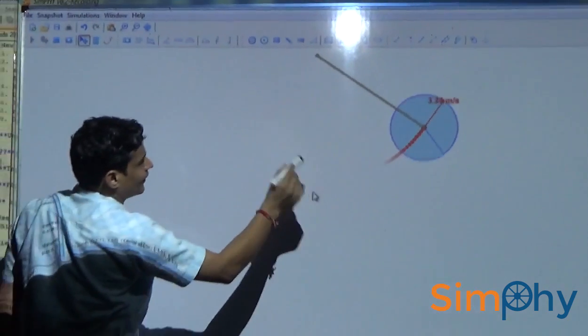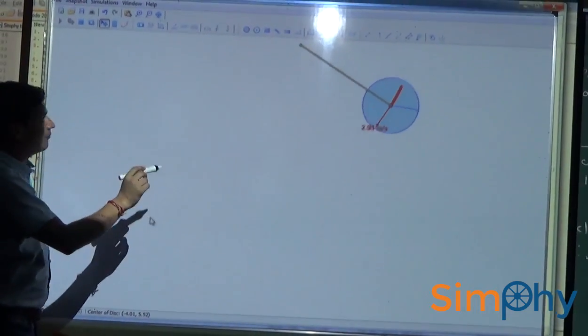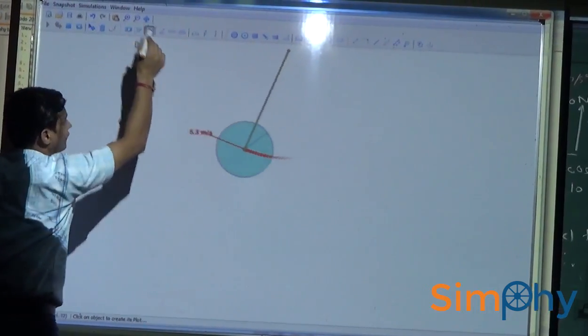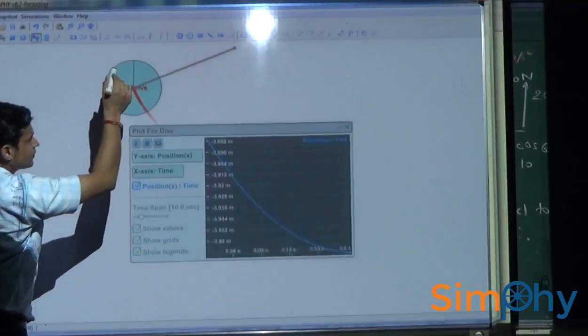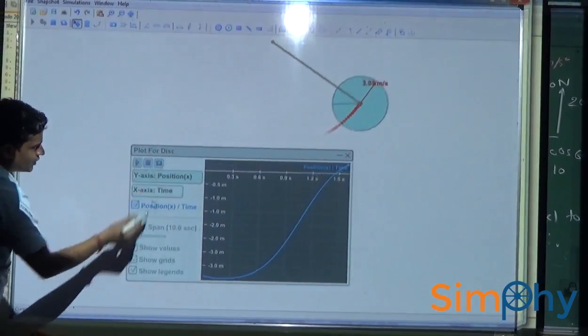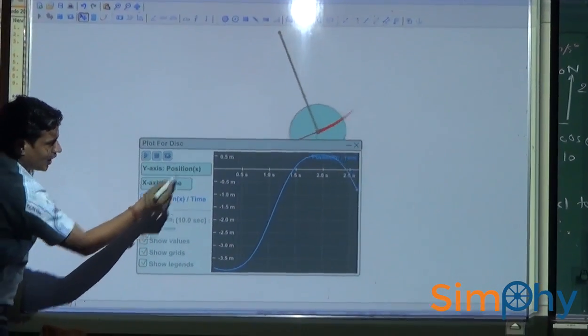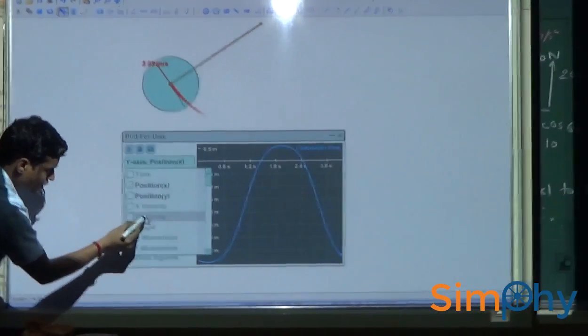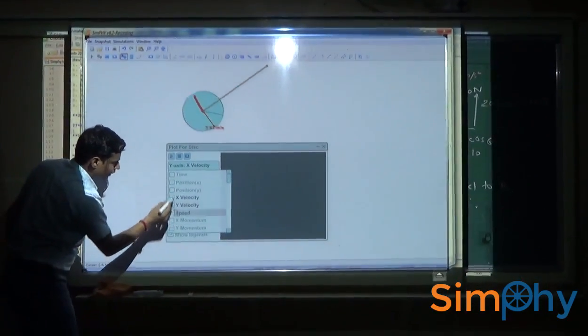Let us analyze the variation of velocity with time using graph. The graph shows variation of position with time. I am going to change position with velocity.